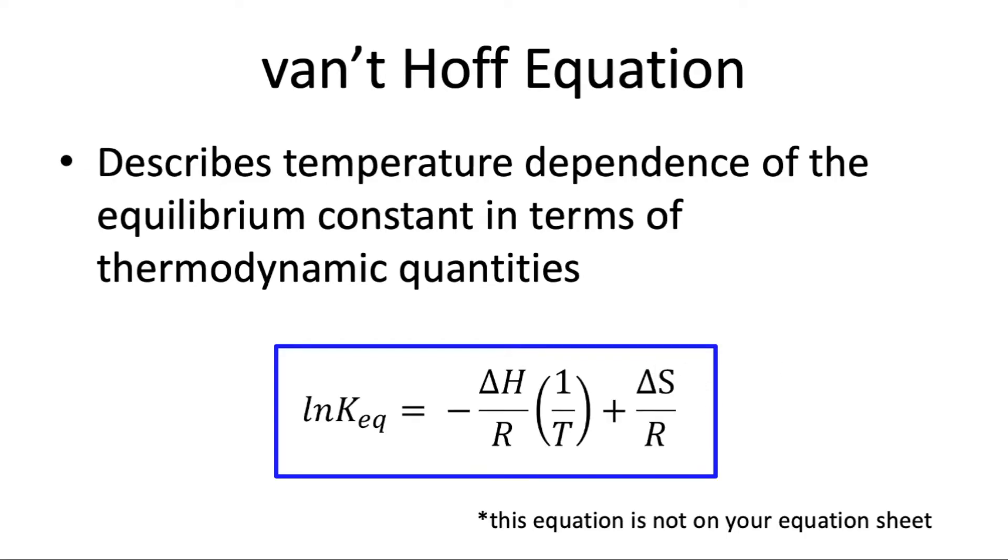So for our reaction what do we think it should look like? Well we know that we've got iron and thiocyanate and they're coming together to form a complex ion, they're forming a bond. And if they're forming a bond then we probably anticipate that our delta H should be negative because whenever we form bonds it should be exothermic. So our slope is likely to be positive indicating a negative delta H.